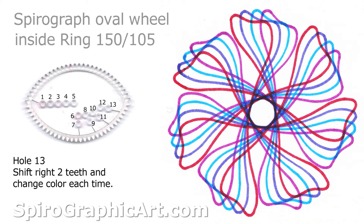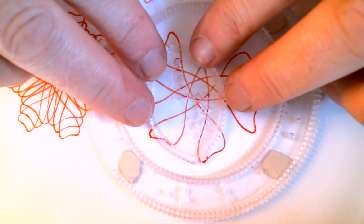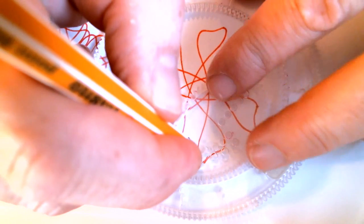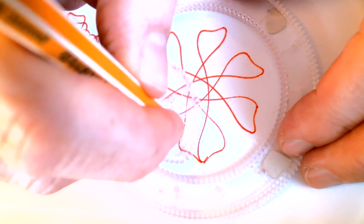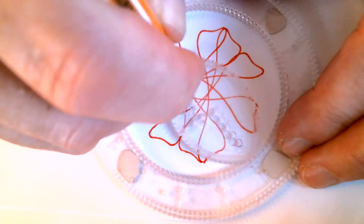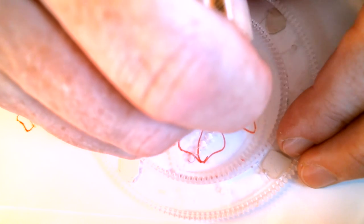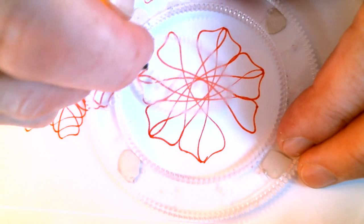Now some interesting things can happen if you flip the wheel over. You notice what we have here is an asymmetrical design, but if we flip the wheel over we'll get sort of the mirror image of this design. So let's see how that works together. Flip it over and then draw the design with the same hole as you did last time and see what happens.